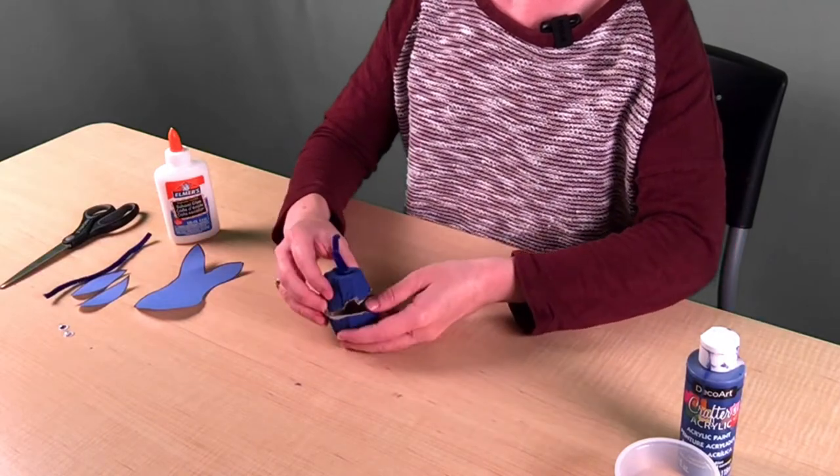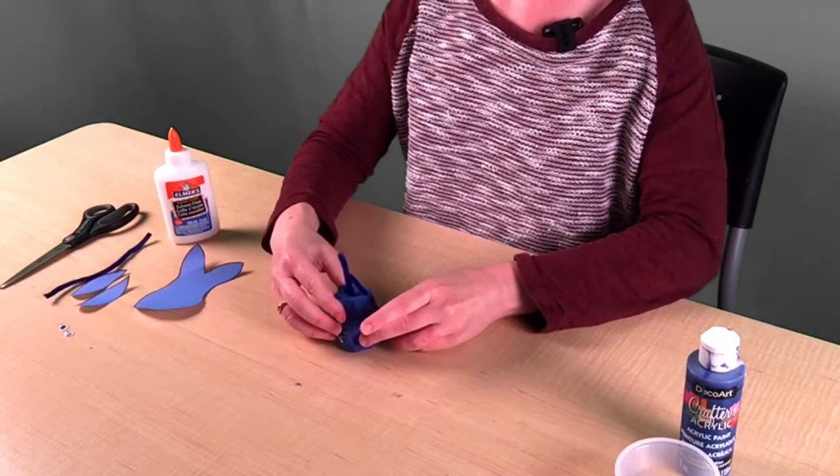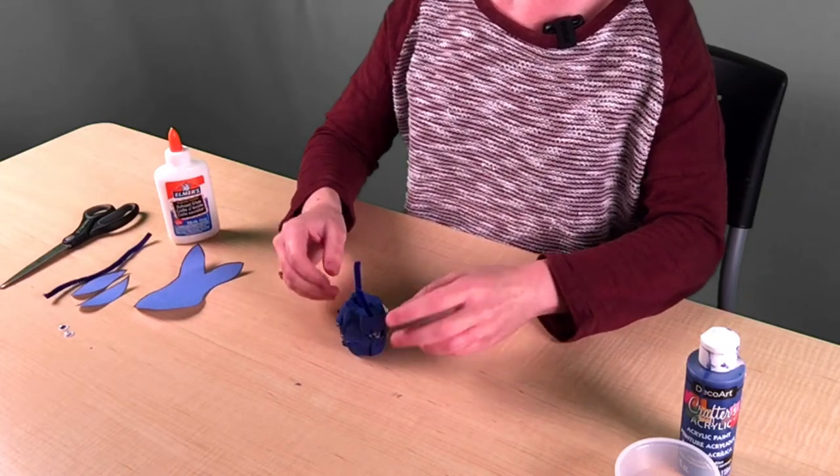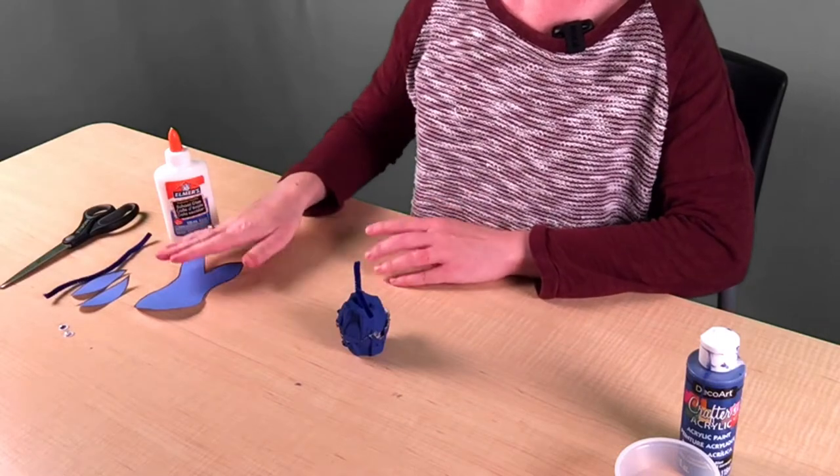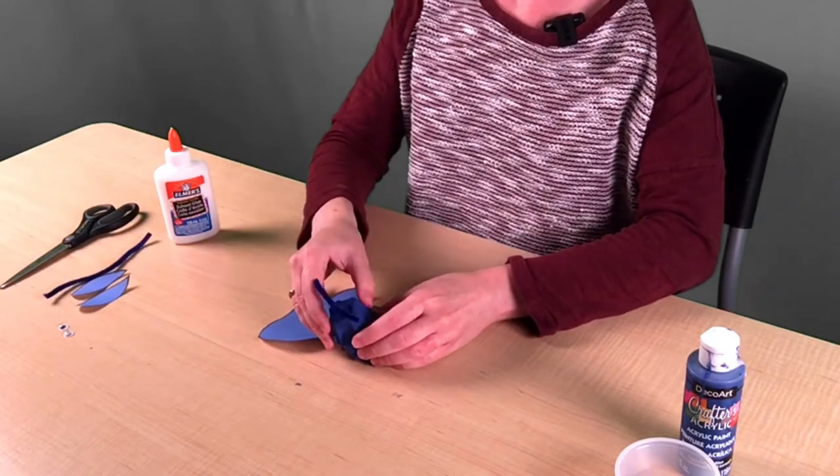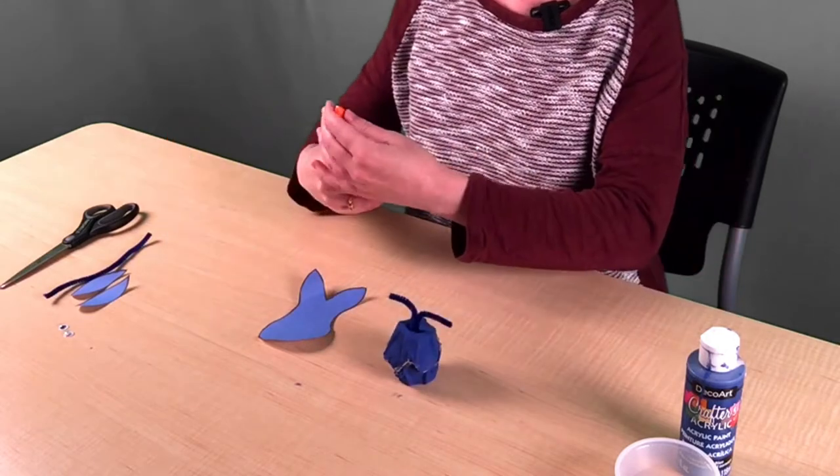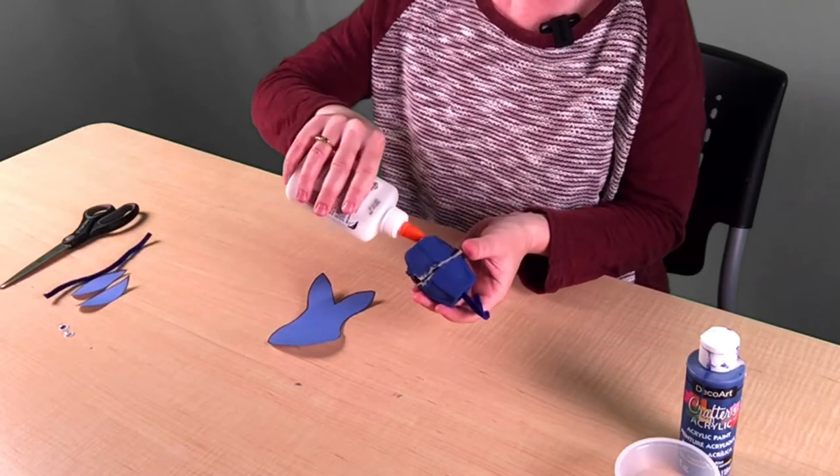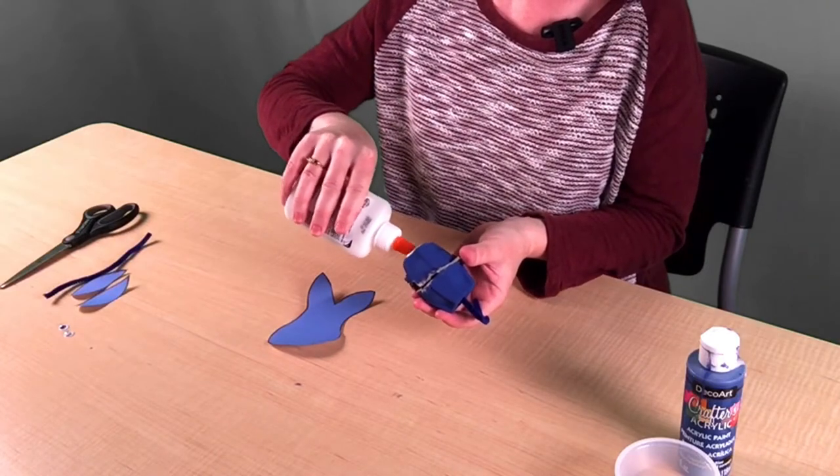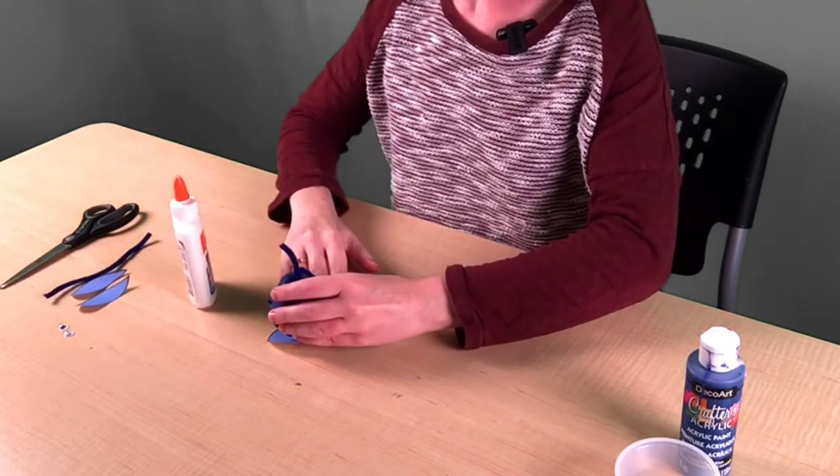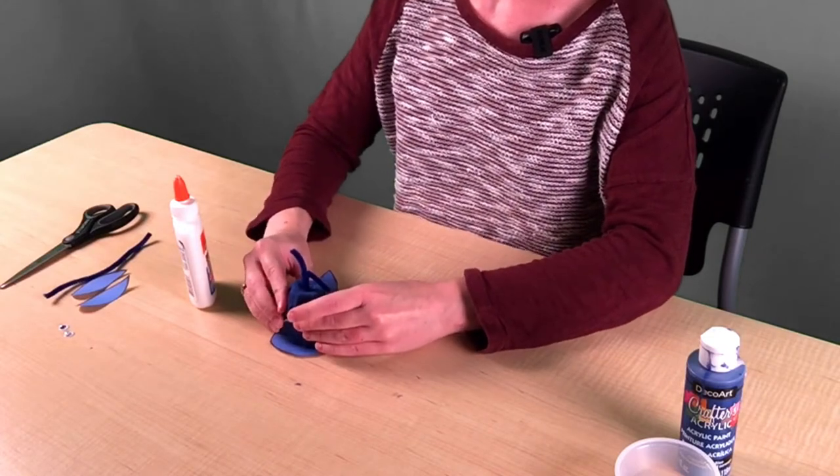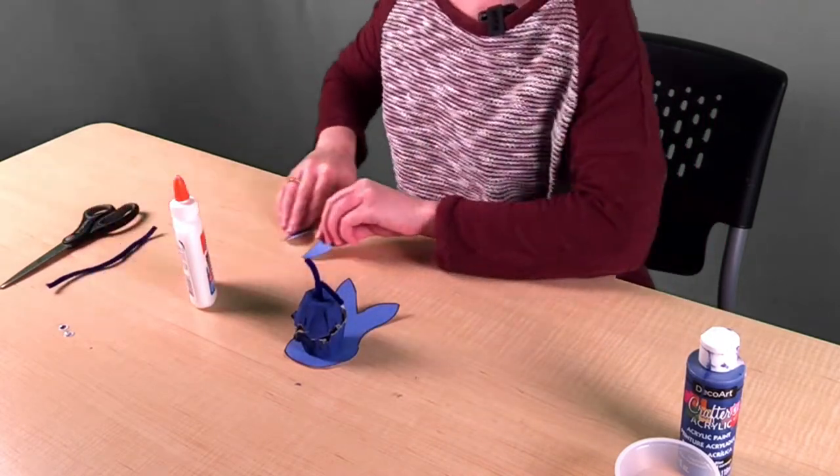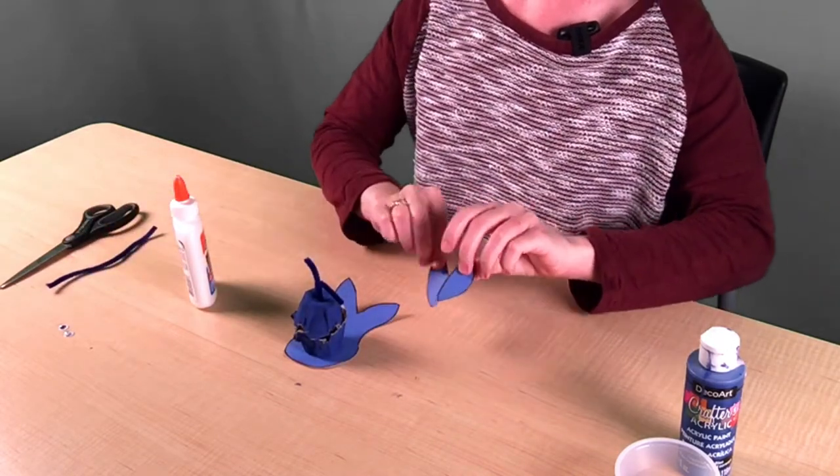Then we're going to stack our egg cartons to create a 3D effect. Next, we'll take our cutout and glue it to our egg cartons. For our whale, we have a piece for the bottom and then two fins for the side.